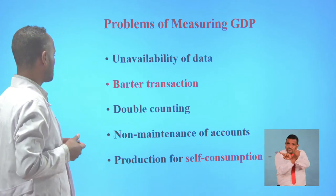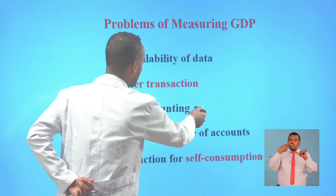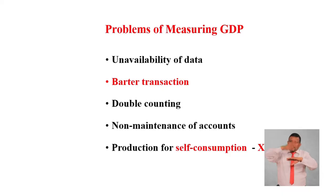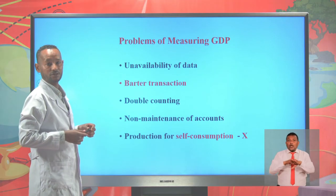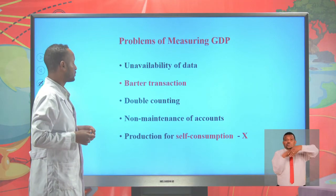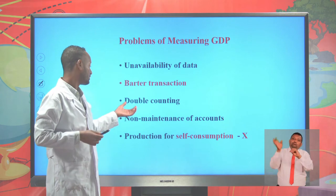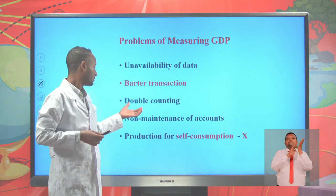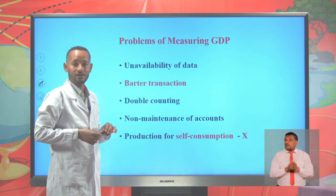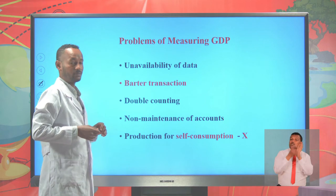Another problem of measuring GDP is double counting. If you add the values of intermediate inputs and outputs together, there is double counting, and it overstates the level of GDP.